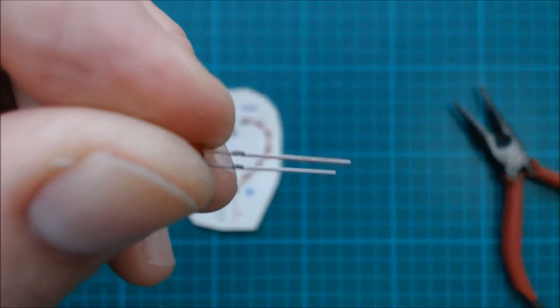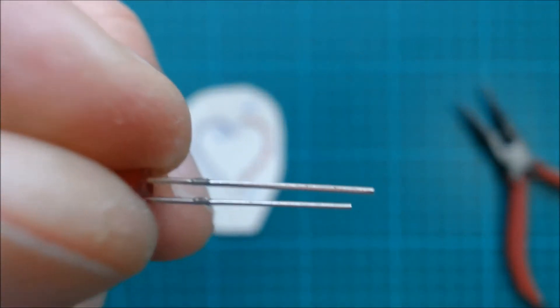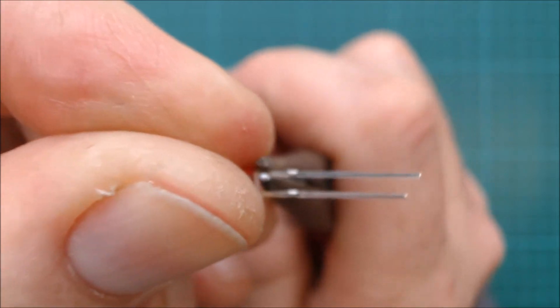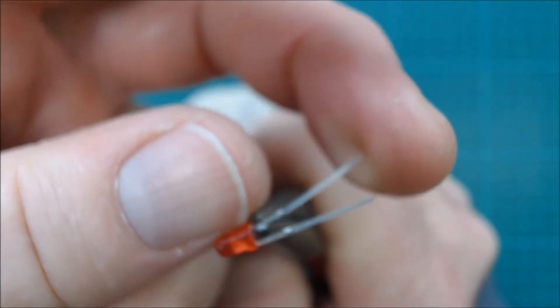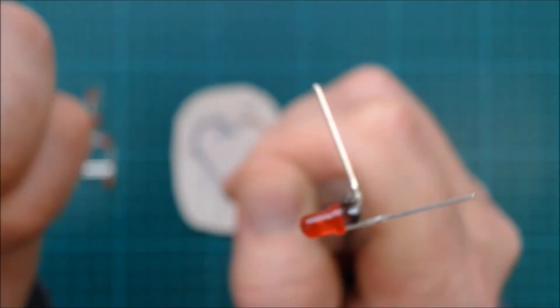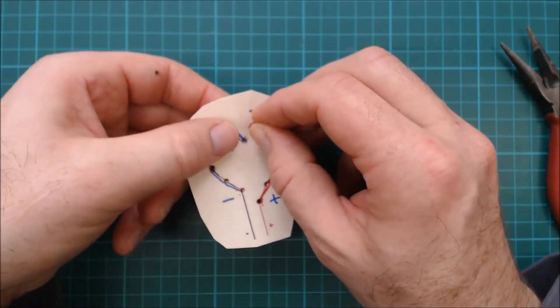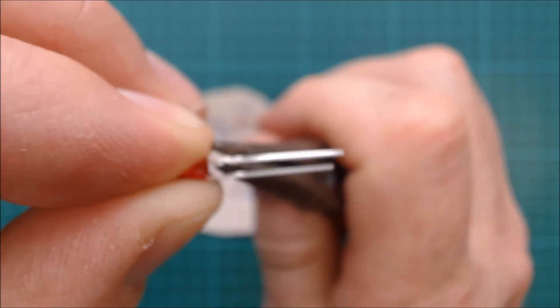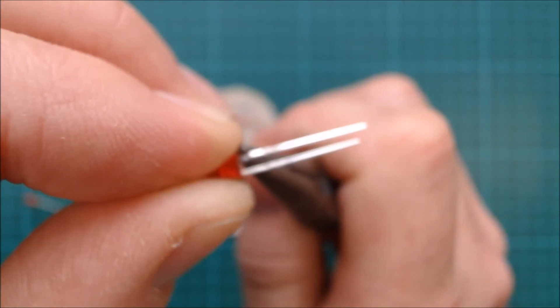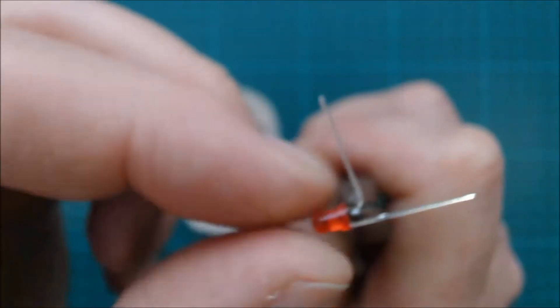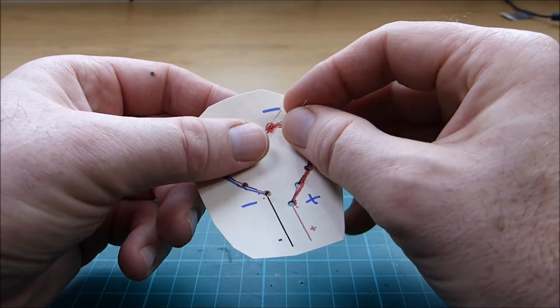Select the first LED and find the long lead. This is the positive side of the LED and we're going to bend this over with the pliers. Starting with the red side, install it into the template with the bent lead pointing towards positive. Now we do exactly the same thing with the second LED, bending the long positive lead and then installing it into the template with the long lead pointing towards positive.